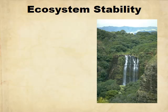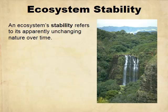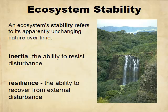When we talk about ecosystem stability, we're talking about the way that it either changes or doesn't change over time. We have two different things: inertia and resilience. Inertia is the ability to resist change, and resilience is the ability to bounce back afterwards.